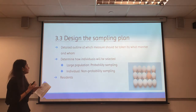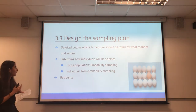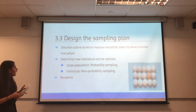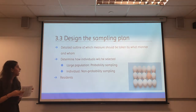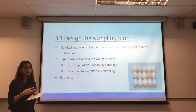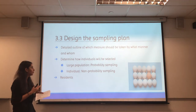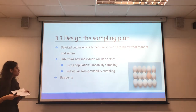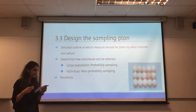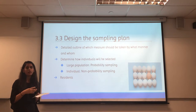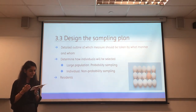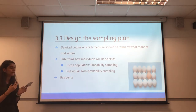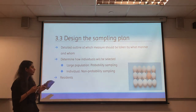The sampling plan is a detailed outline of which measures should be taken, by what measure, and by whom. There are two considerations: whether the survey is for a larger or smaller population. For a larger population, probability sampling would be used; for a smaller or unique population, non-probability sampling is used. Probability sampling ensures each person in the population has a fair and equal chance of participating and is used as a reliable estimate of the whole population. For this case, targeting residents means probability sampling would be used.